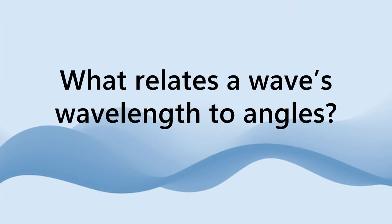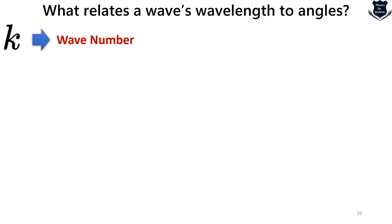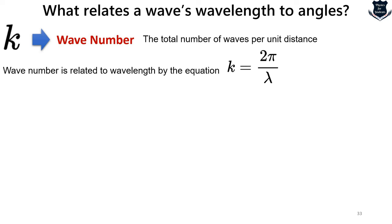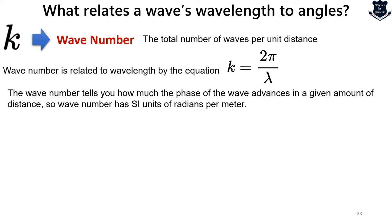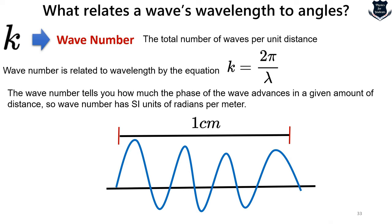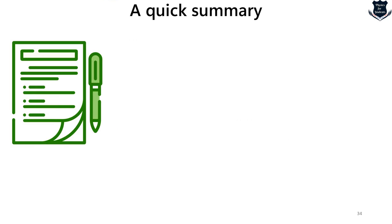The final question: what relates a wave's wavelength to angles? This is called the wave number, denoted by k, given by the relation k equals 2 pi divided by lambda. The wave number tells you how many waves occur per unit distance — for example, how many waves fit into 1 centimeter. As a question for viewers: in the figure shown, can you count the number of waves in 1 centimeter? Let me know the wave number in the comment section.